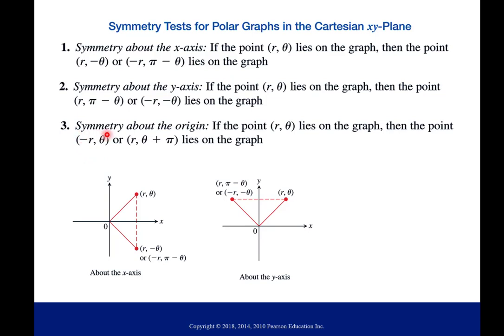And then the third type is symmetry about the origin. So your point (r, θ) is on your graph but so is the point (-r, θ). So that symmetry goes through the origin. And so this one here, this one's a little interesting and I'll show you an example with this. It's more so like a rotation.